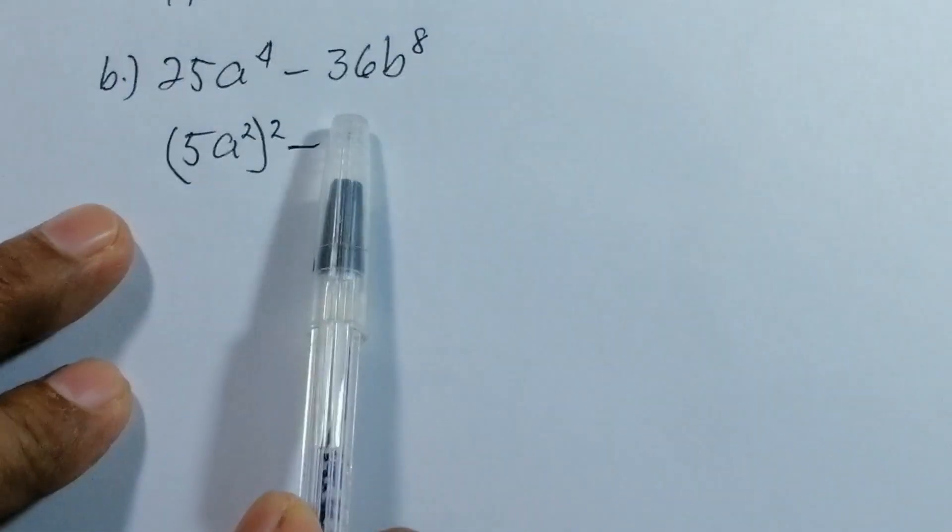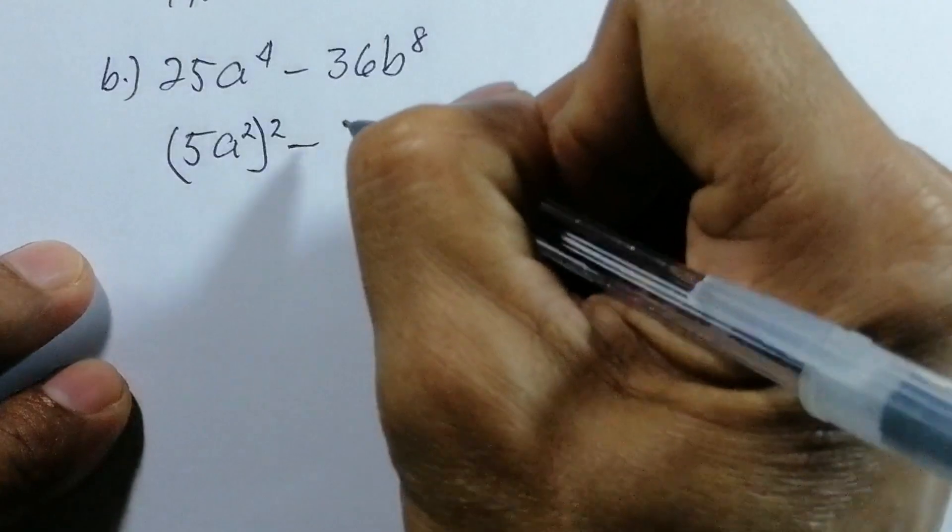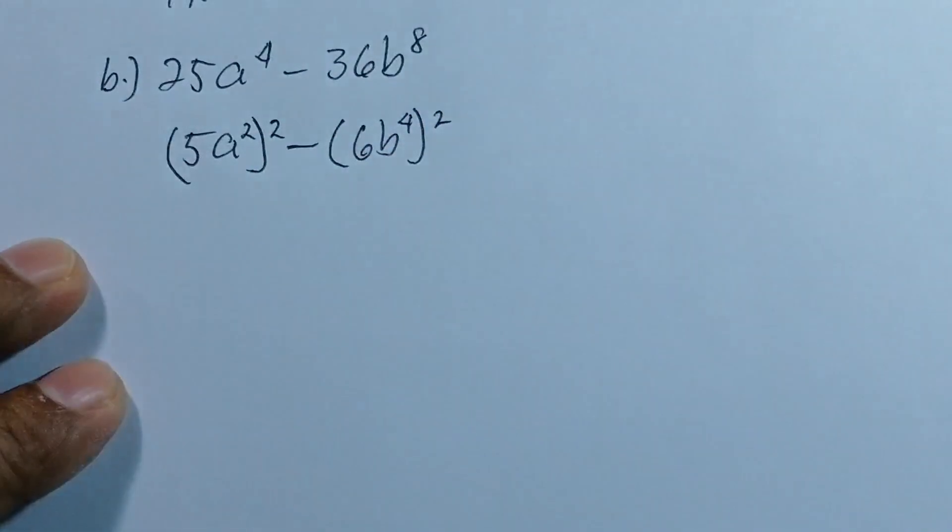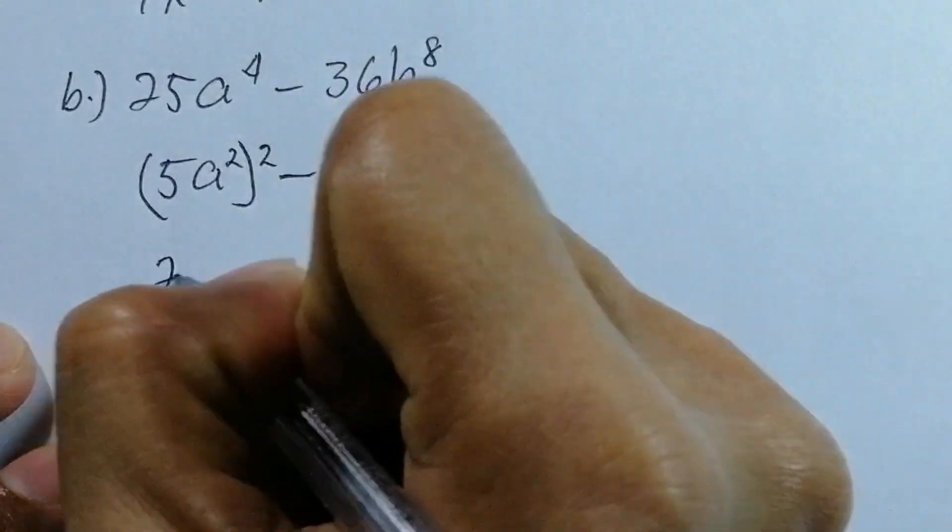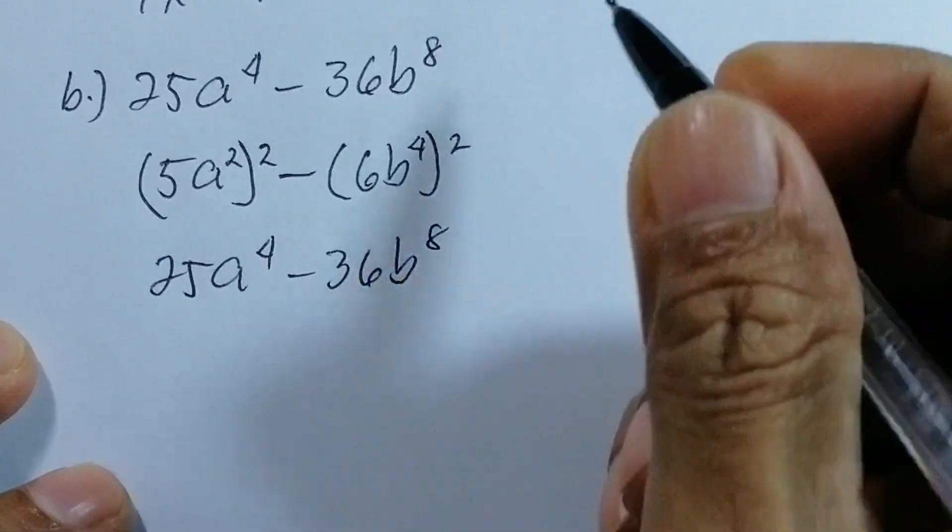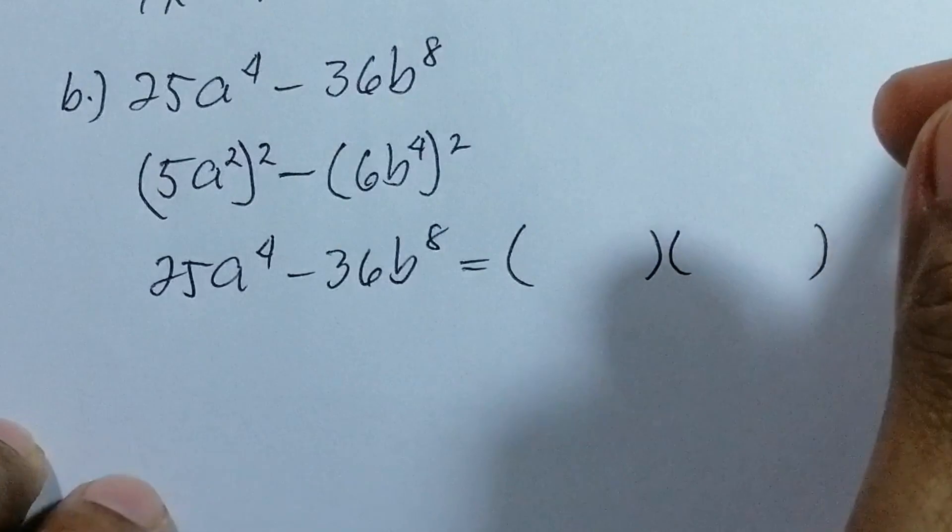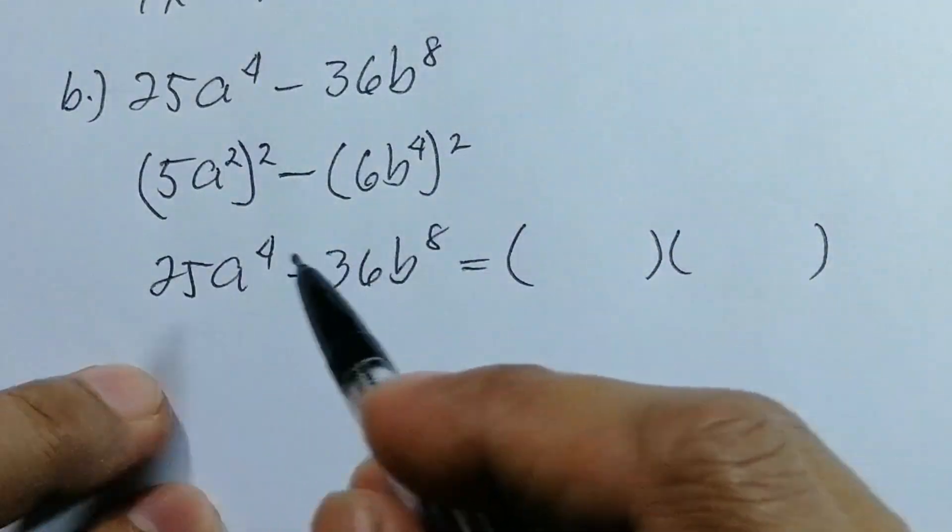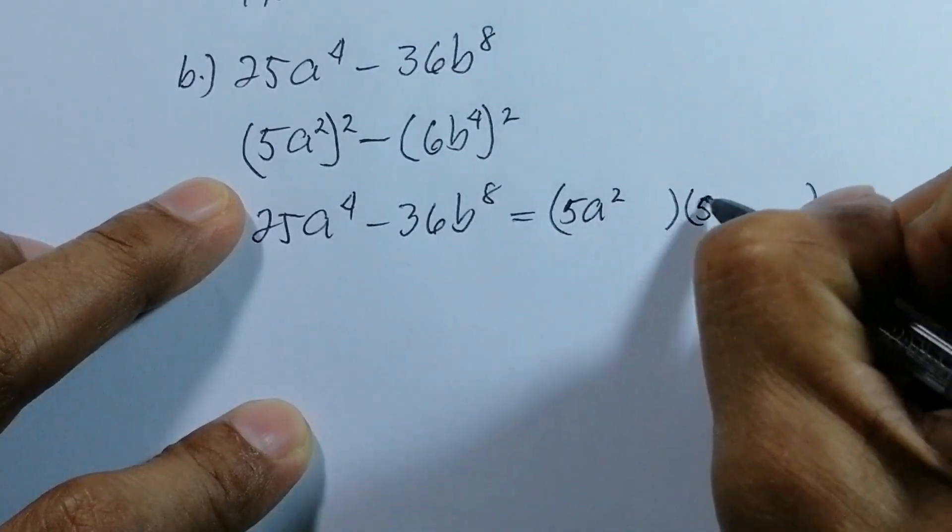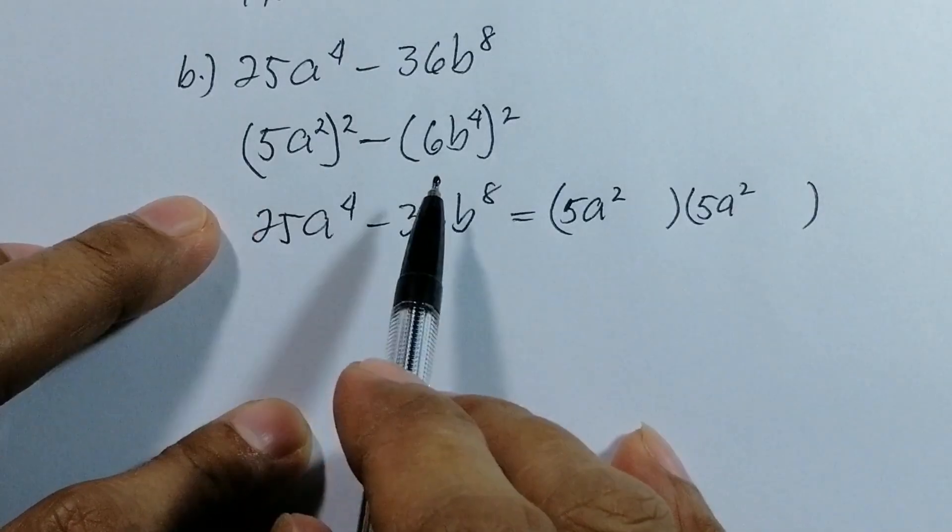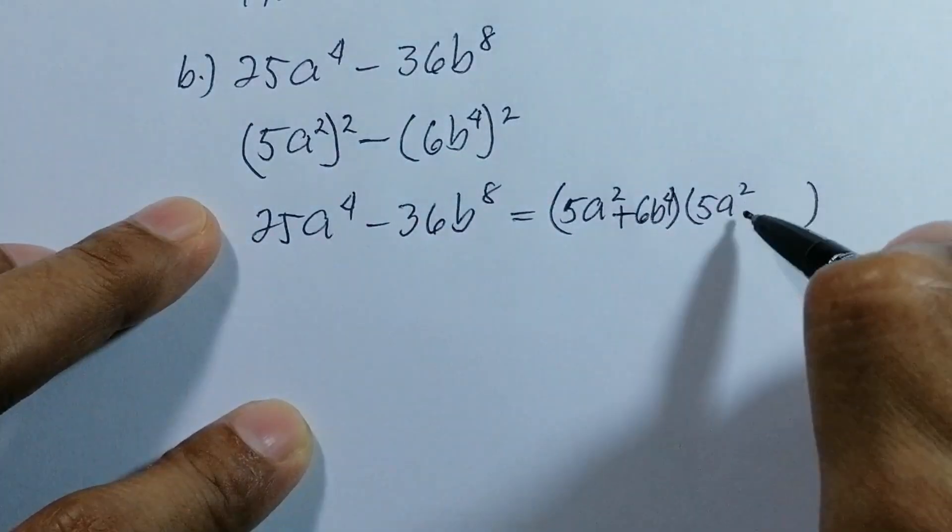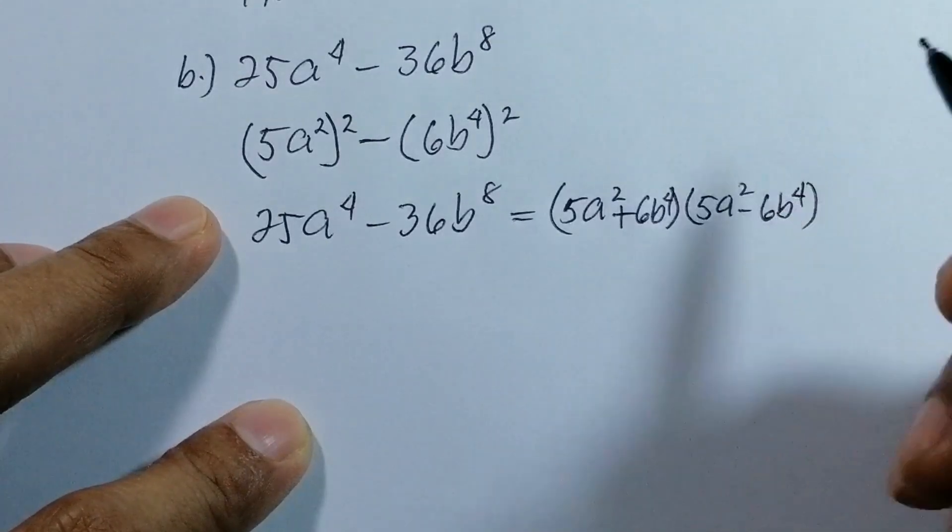Minus the square root of 36, which is 6, so we write 6b⁴ as (6b⁴)². Now, 25a⁴ - 36b⁸ equals, using difference of squares: (5a² + 6b⁴)(5a² - 6b⁴).